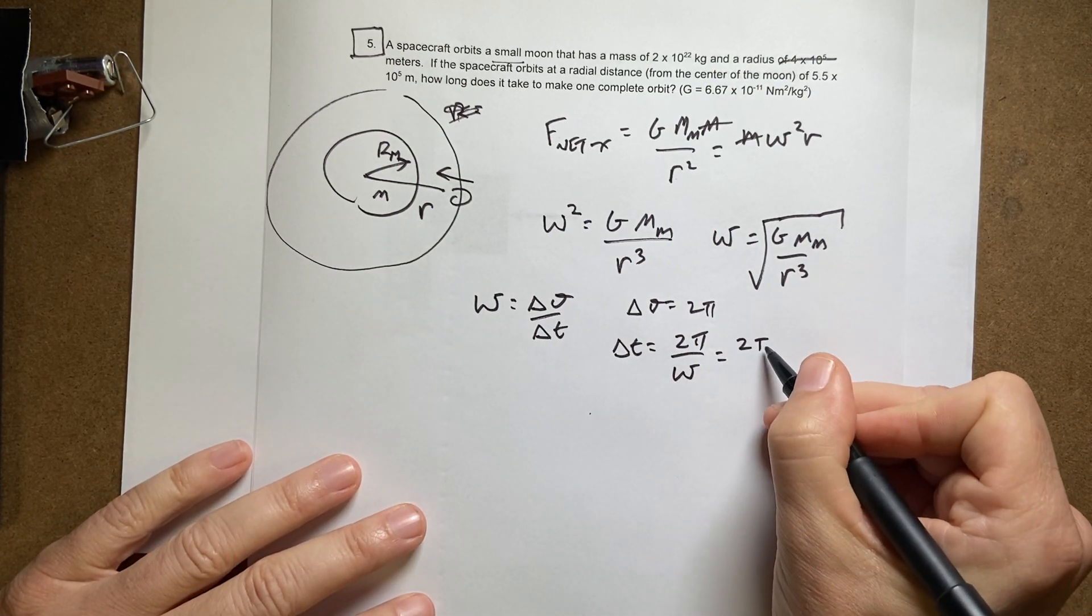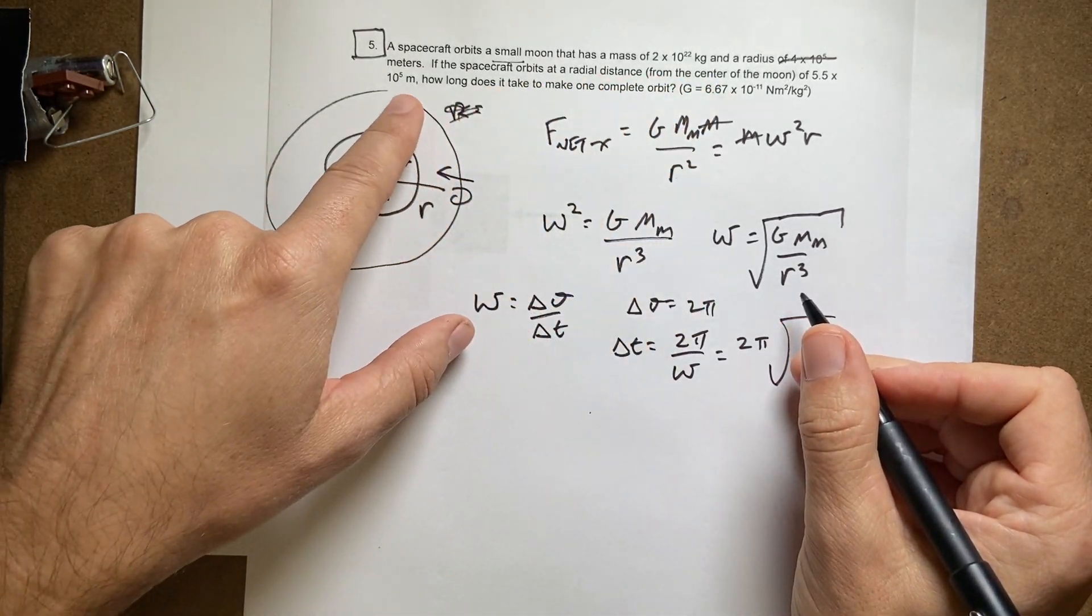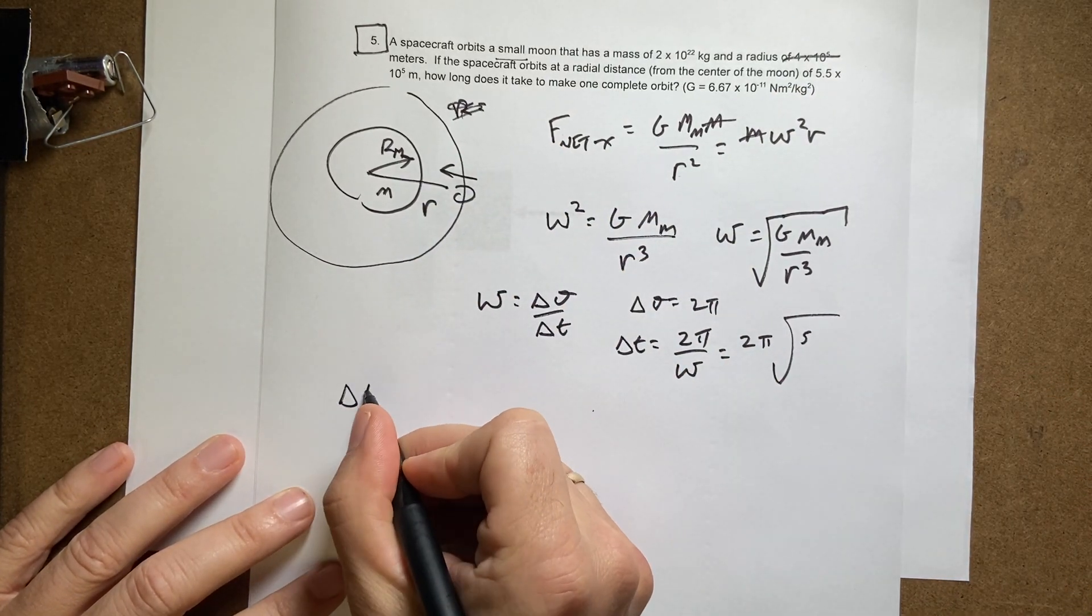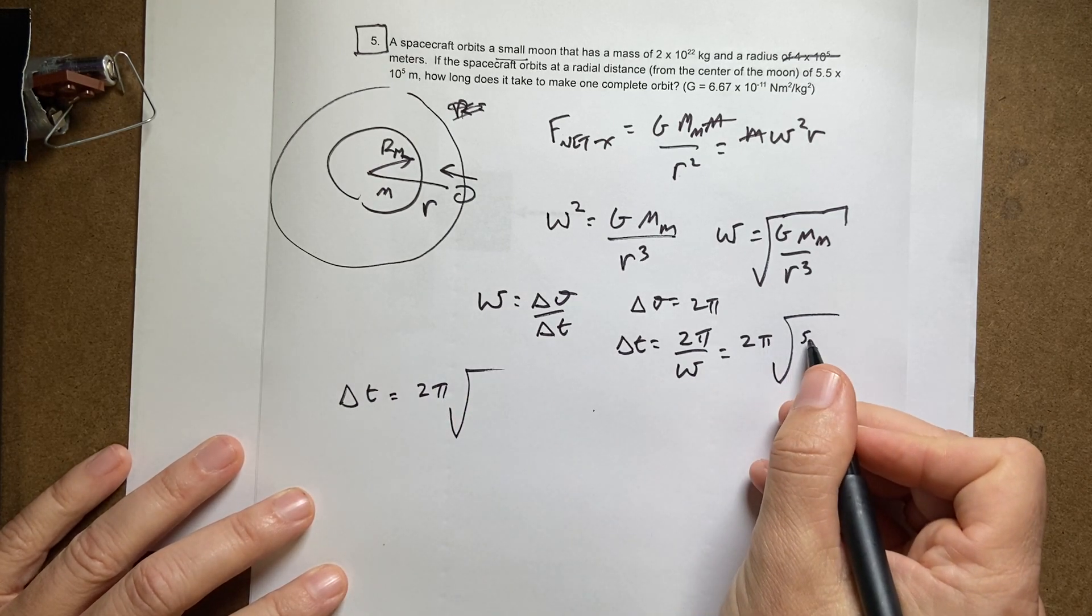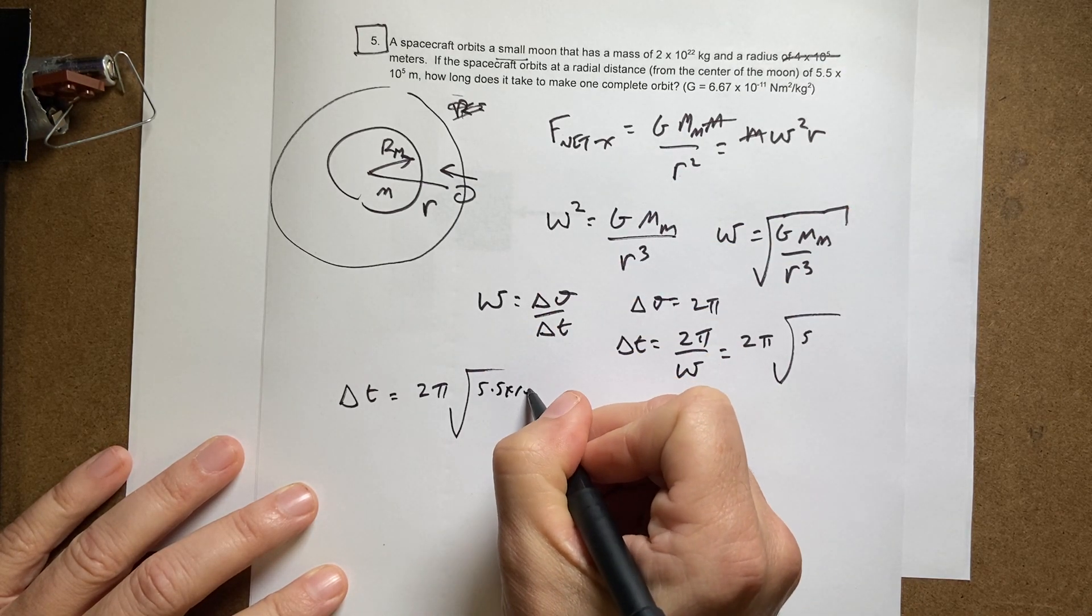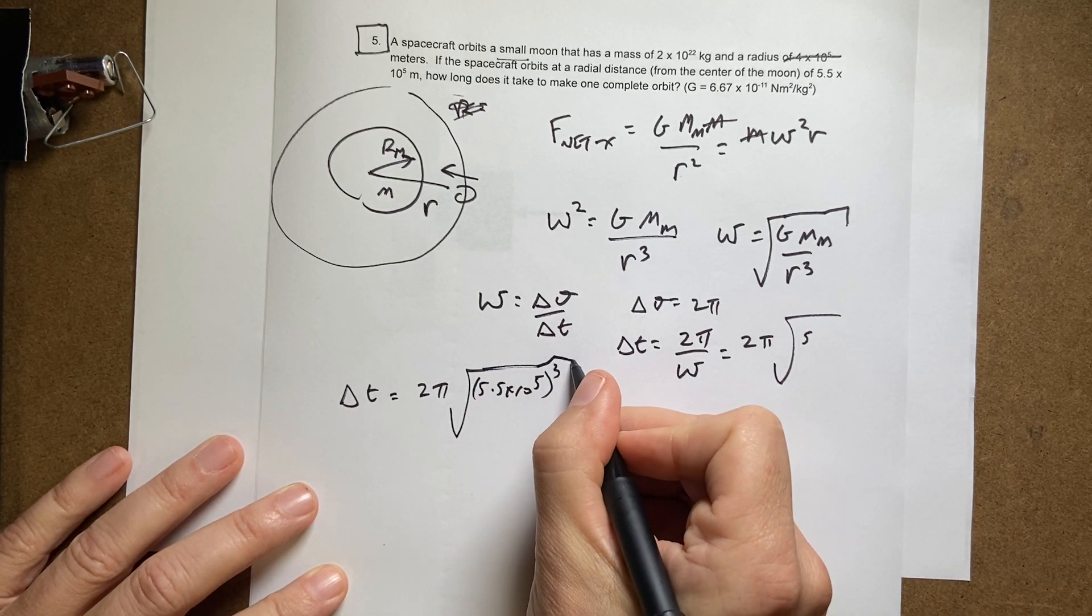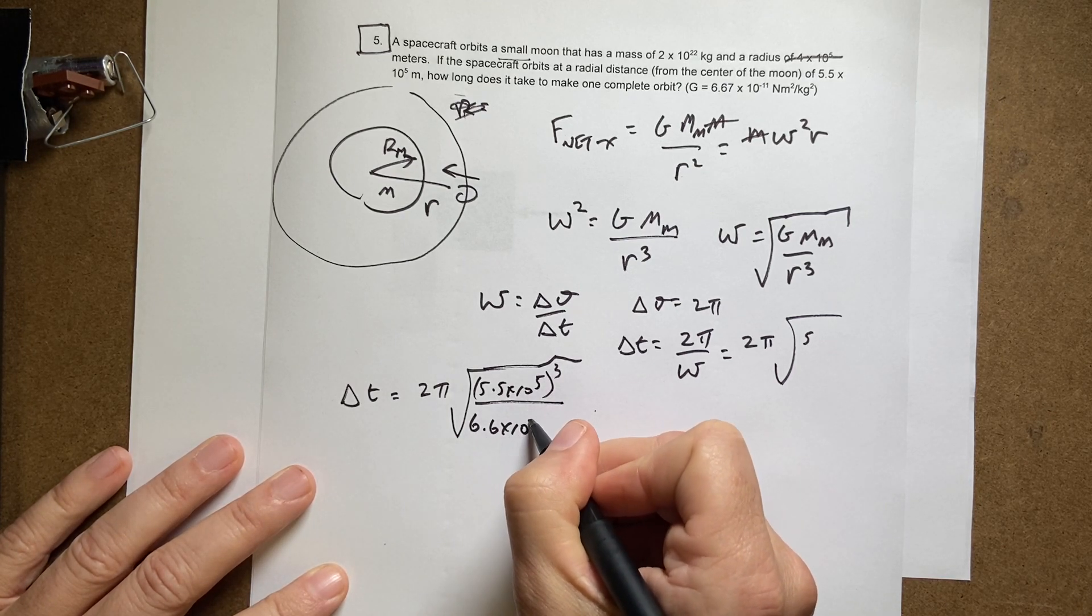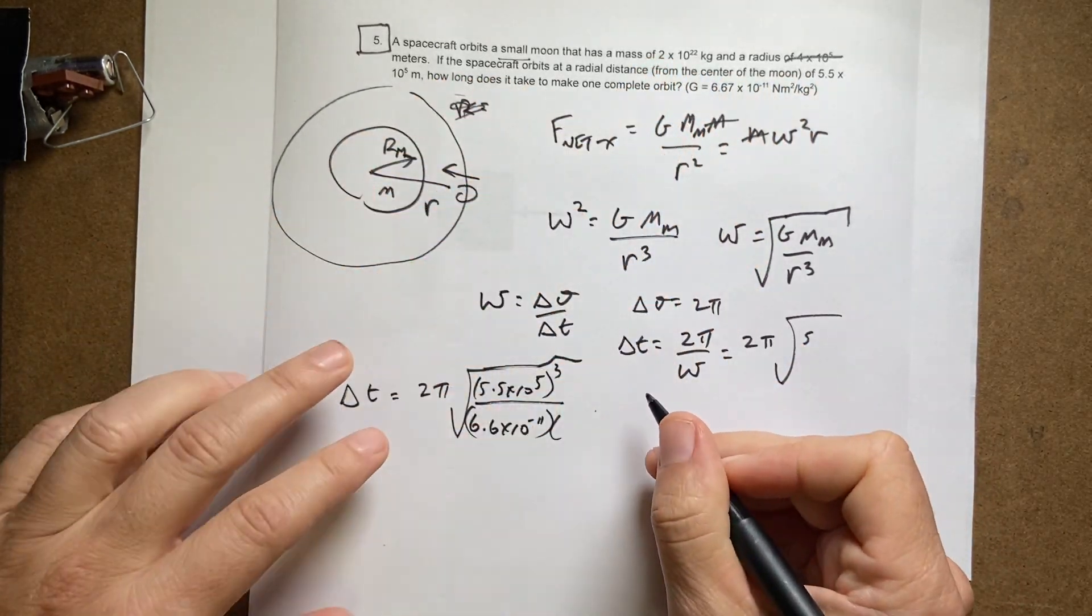So that's going to be 2 pi times the square root of r cubed, this one. I'm going to put it over here. Delta t equals 2 pi times the square root of r, 5.5 times 10 to the fifth cubed. That's all in there. Divided by G, 6.67 times 10 to the negative 11th, times the mass of the moon, 2 times 10 to the 22nd.